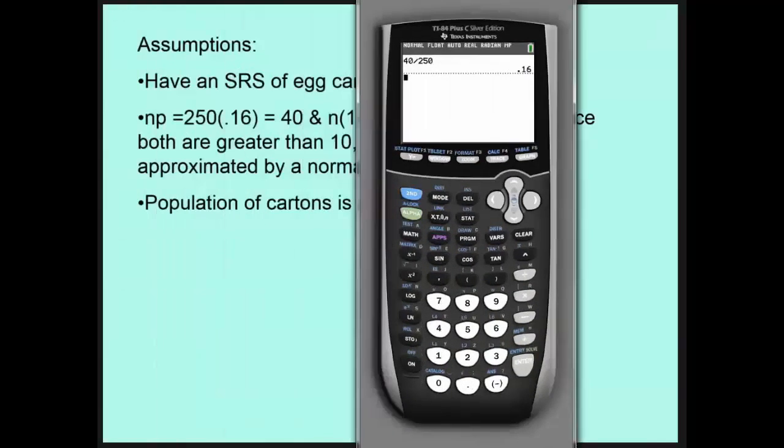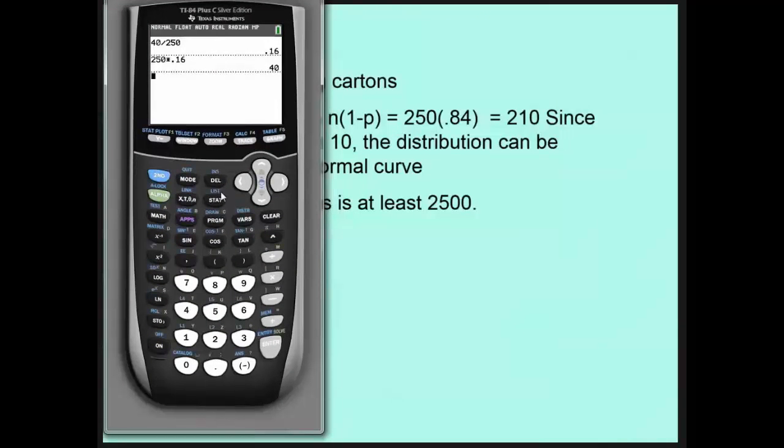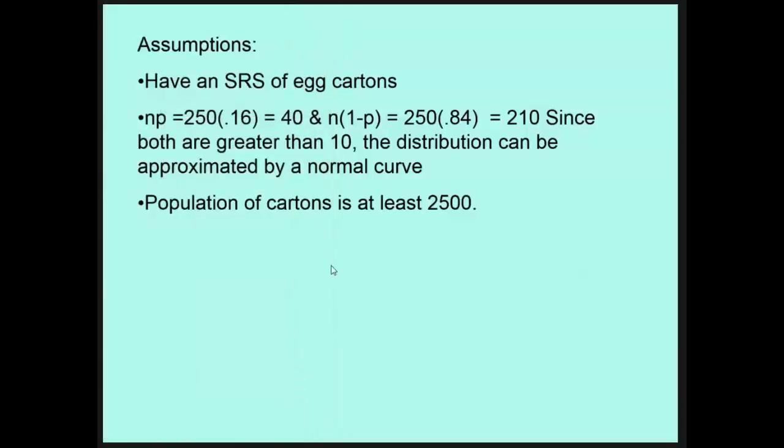So 250 times .16. And we're just checking to make sure it's bigger than 10. It is. That's not coincidence that it equals 40, by the way. And then I want 250 times one minus .16. That gives us 210. So in both cases, it's bigger than 10.